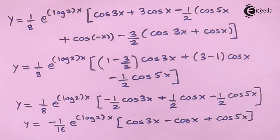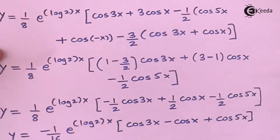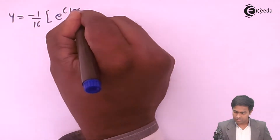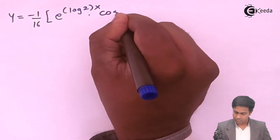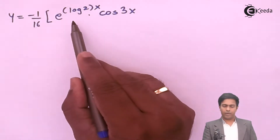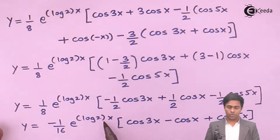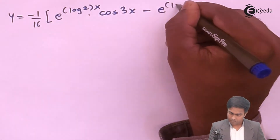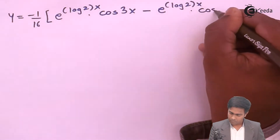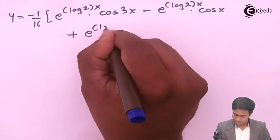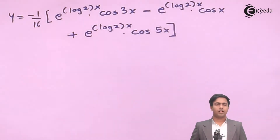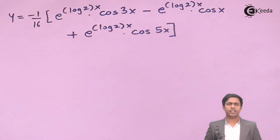To find the nth derivative, we multiply each term in the bracket by e to the power log 2 times x. So y equals negative 1 by 16 in brackets, distributing e to the power log 2 times x into each of the three cosine terms. This gives us the value of y, and now we will find the nth derivative of this.